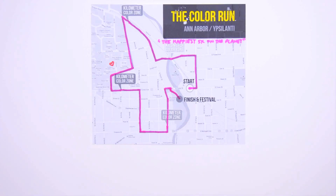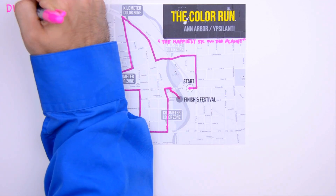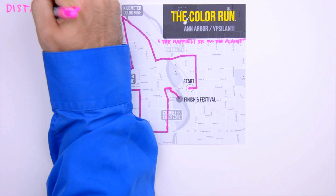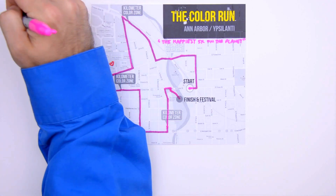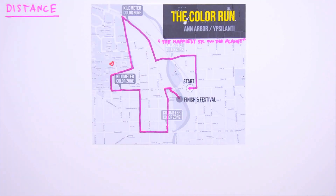We're going to determine a particular runner's average speed and average velocity for their run. But before we do so, we need to understand the difference between two more fundamental quantities: distance and displacement.